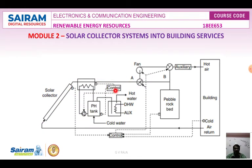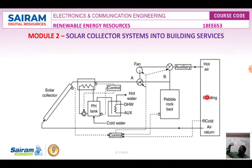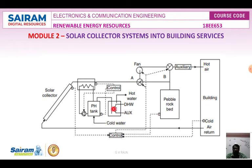This is the schematic diagram for the solar air heating system used to heat a building. Unlike an air conditioner — which absorbs hot air and outputs cool air — this system absorbs cool air and passes heated air through the building with the help of the solar collector system.